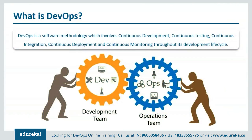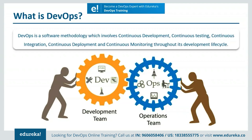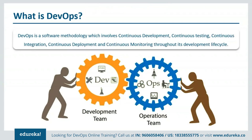Starting with today's session, let me first brief you on DevOps. DevOps is basically a software development strategy which bridges the gap between the dev side and the ops side of the company. In simple words, DevOps is a software methodology which involves all the steps from continuous development, continuous testing, continuous integration, continuous deployment, and continuous monitoring throughout its development lifecycle — from building, testing, and compiling the code to finally putting it onto the production servers.